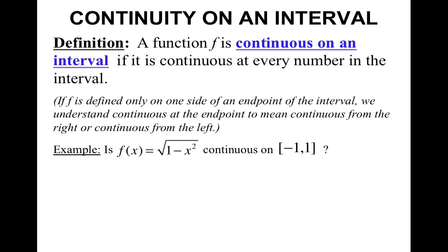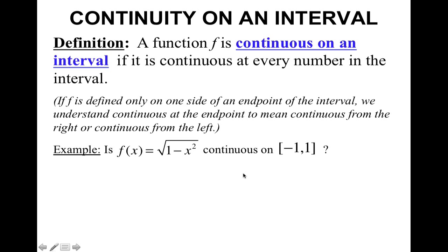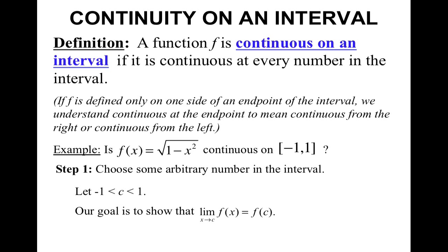For example, f of x equals the square root of 1 minus x squared is continuous on the closed interval negative 1 to 1. First, you need to show continuity everywhere inside the interval. Let there be some arbitrary number c between negative 1 and 1, not including the endpoints. Our goal is to show that the limit as x approaches c of f of x equals f of c. Plugging c in, f of c is defined. You then take the limit as x approaches c, plug in c, and you do get a value. So the limit exists and equals f of c.